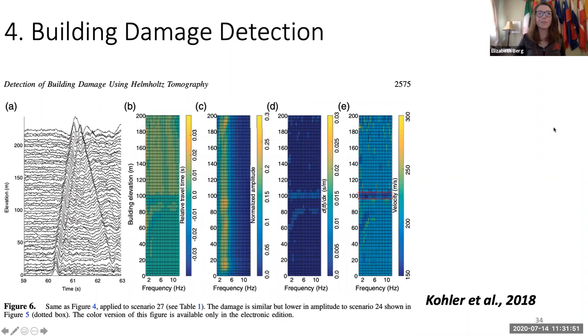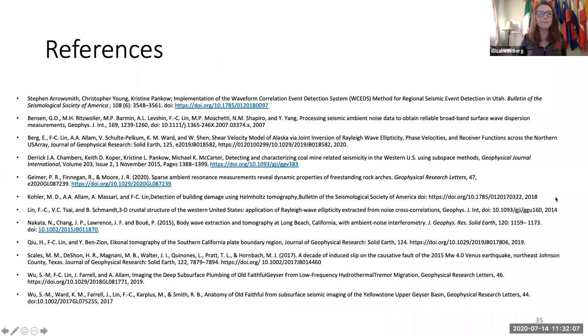And then here's just one example - there are a lot of examples of this - but building damage detection. This is from Kohler et al. 2018, which is using cross correlation to estimate where there is damage within a building. So go check out that study as well.